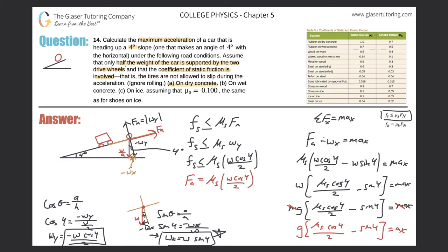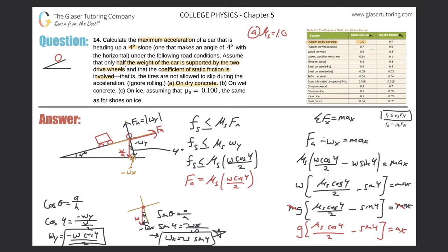For letter A on dry concrete: from the table, rubber on dry concrete gives μs = 1.0. Plugging in: ax = 9.8 × [1.0 × cos(4°)/2 − sin(4°)]. Calculating: 1 × cos(4°) ÷ 2 − sin(4°), then multiply by 9.8. We get ax = 4.20 meters per second squared.